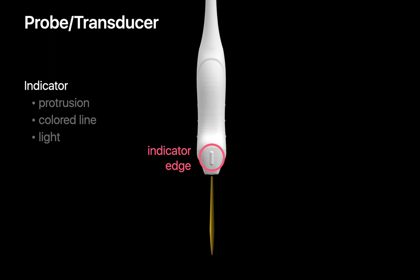The indicator might be a protrusion like on this probe, or a line, or a colored light.